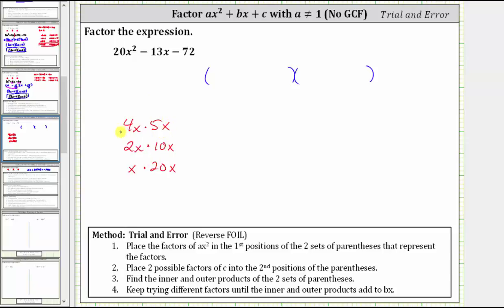But normally, we use the factors where the coefficients are closest together, and therefore, in this case, let's use 4x and 5x. This is not always the case, but let's start with this.